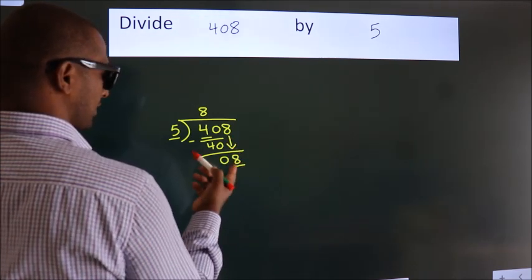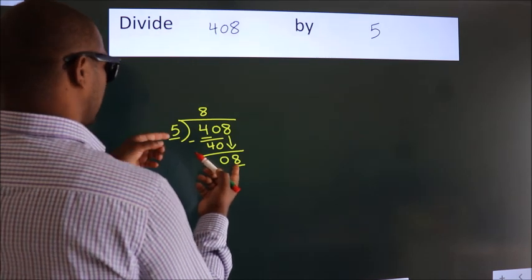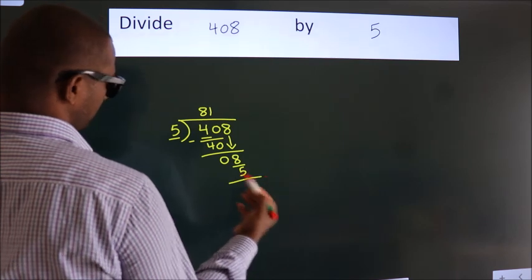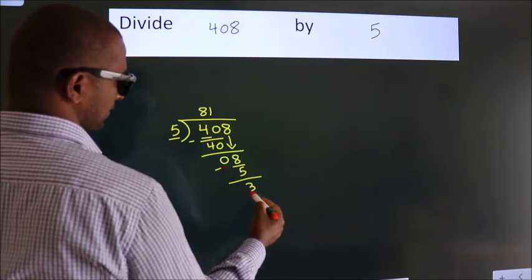So, 8. A number close to 8 in the 5 table is 5 times 1 is 5. Now we subtract and get 3.